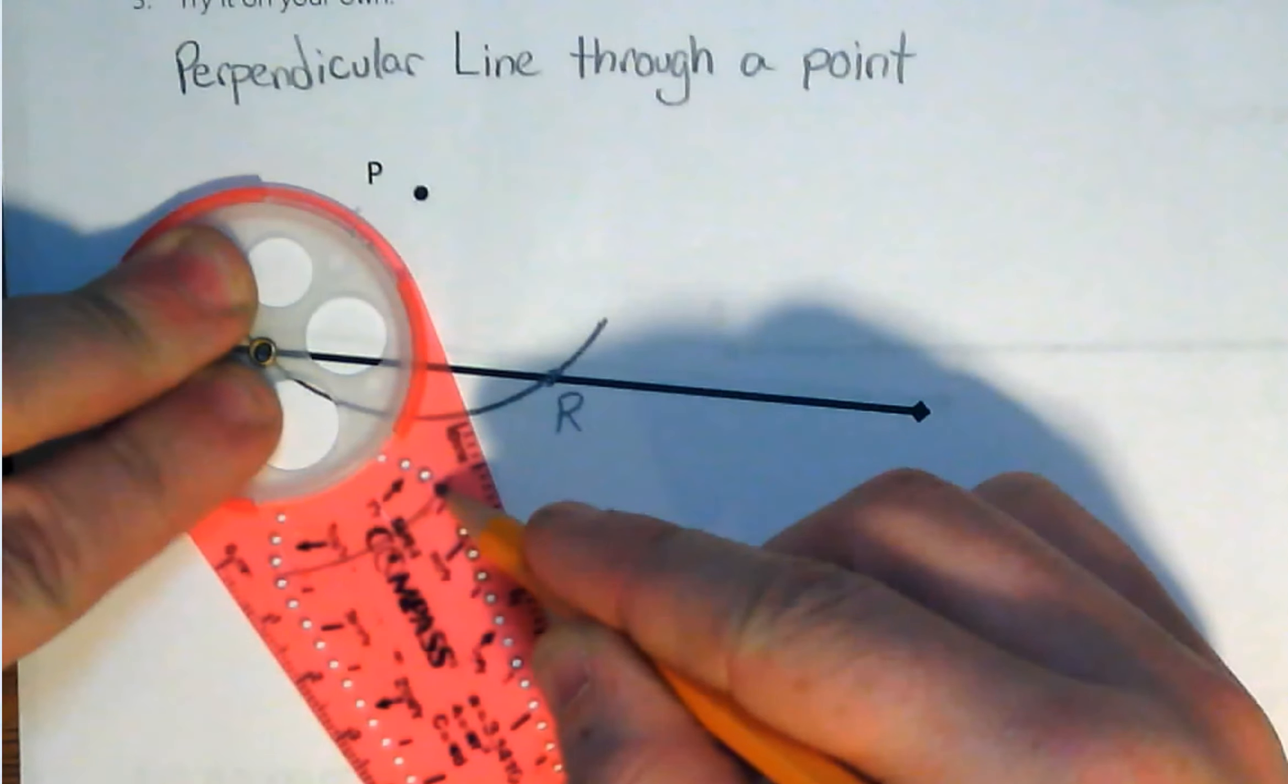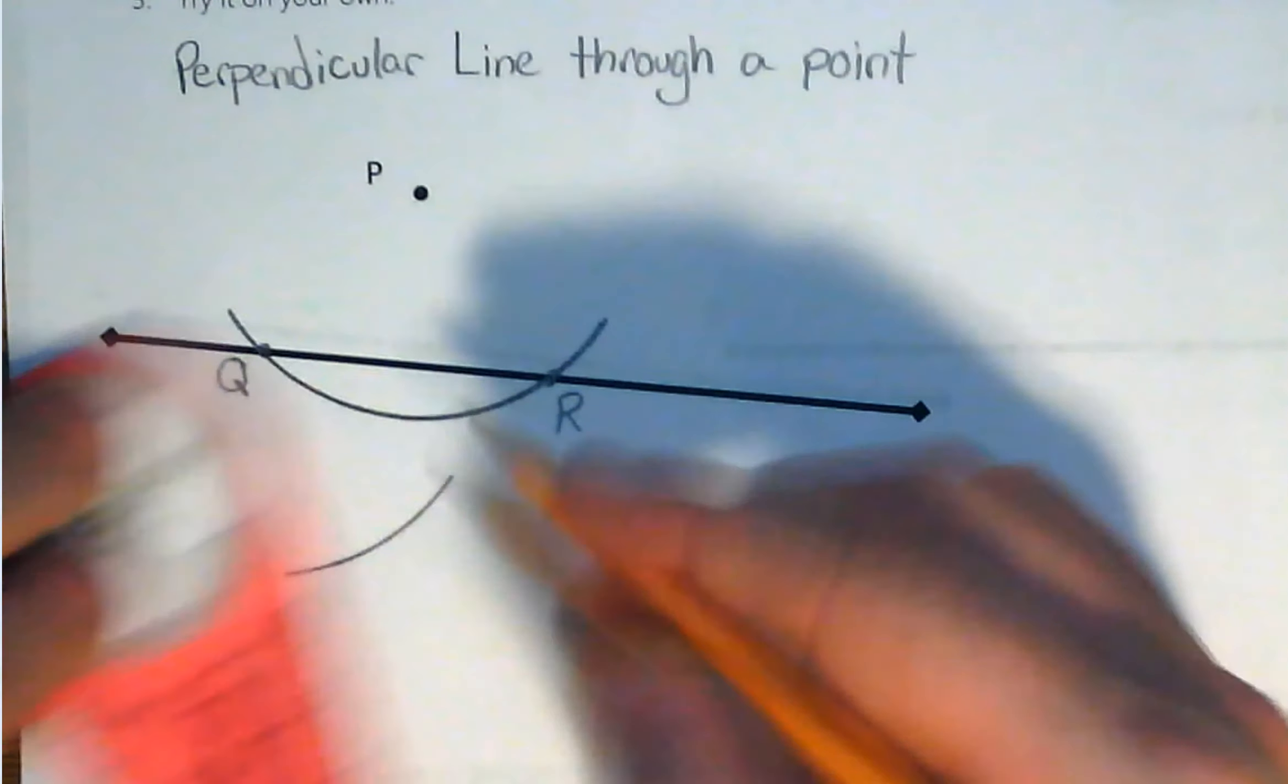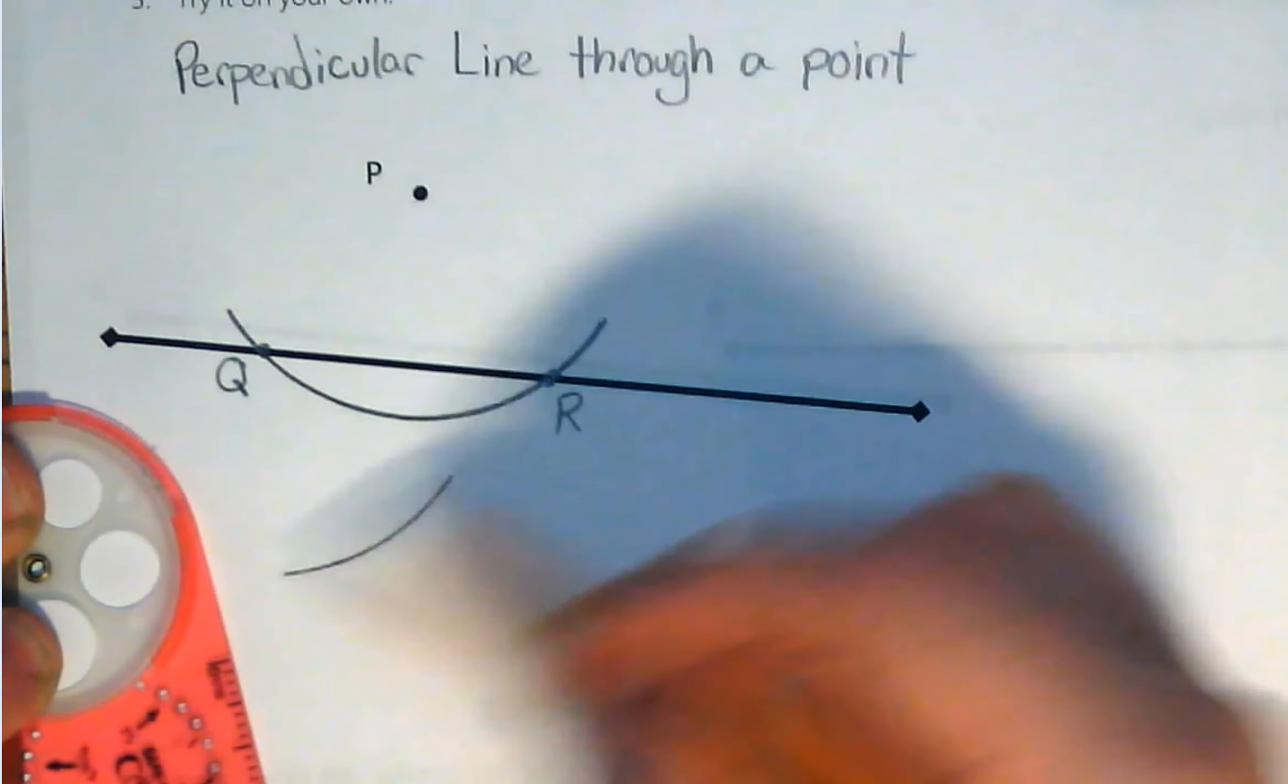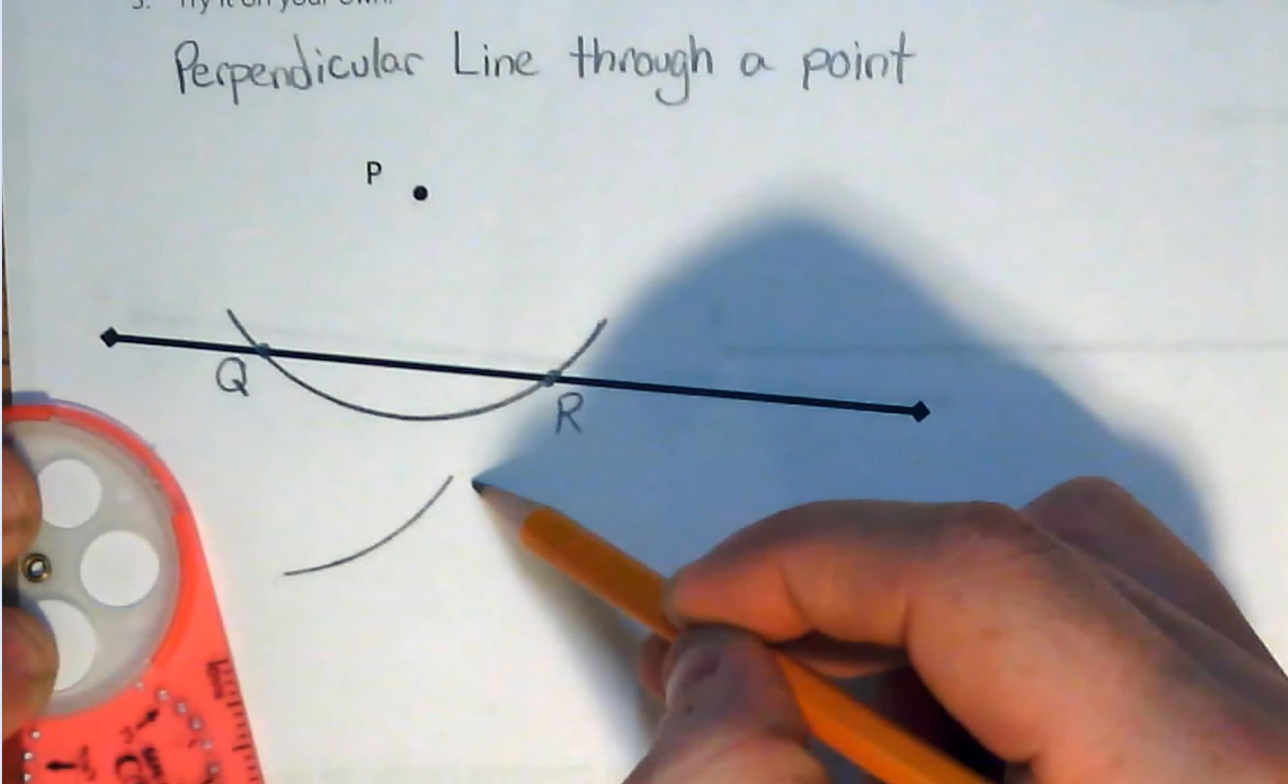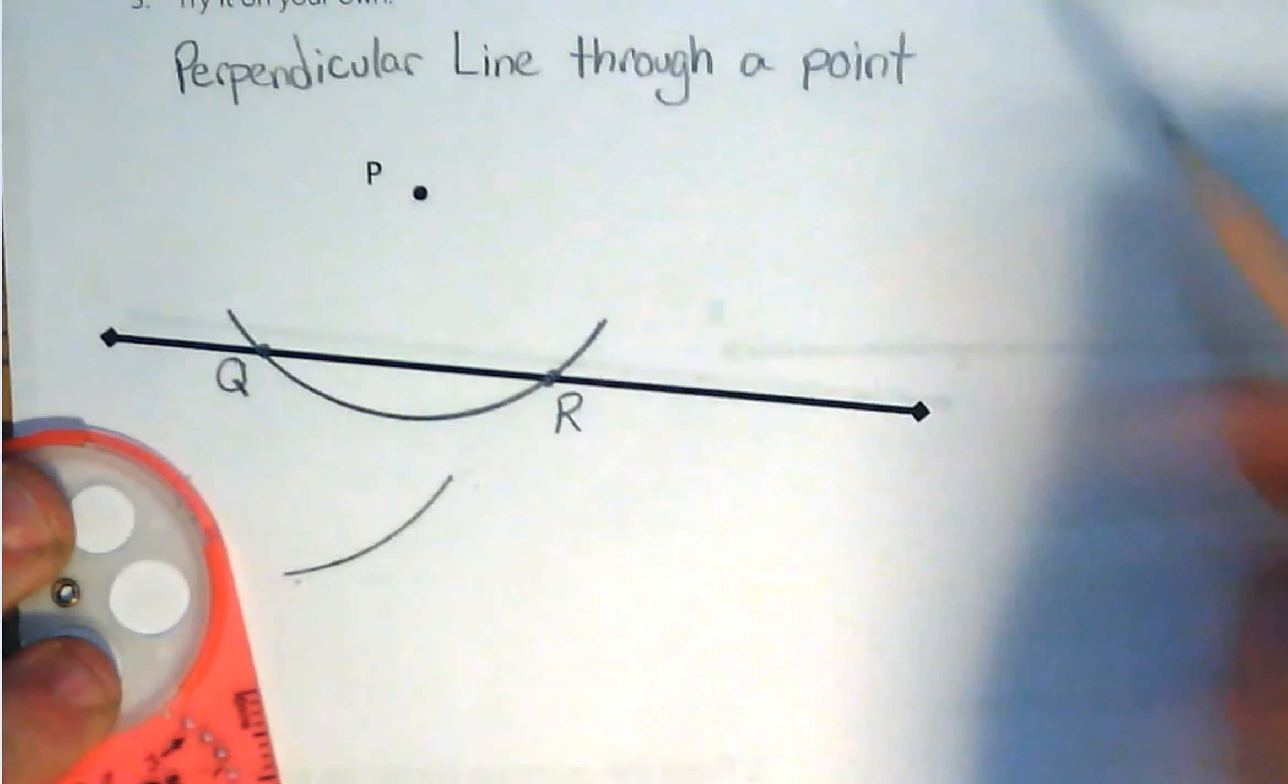Now, when we draw this arc, we want that arc to be on the left and the right of that point P. So as long as it's on the left and the right, we're good. So it's on the right there, it's on the left there, I'm good.